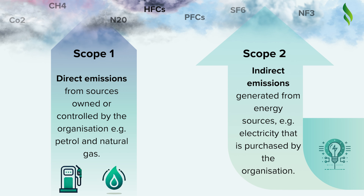To kick things off, we'll look at scope 1 and 2 data for 2023 emissions occurring in the UK. In this case, a company is reporting their petrol and natural gas emissions under scope 1 and their electricity emissions under scope 2.